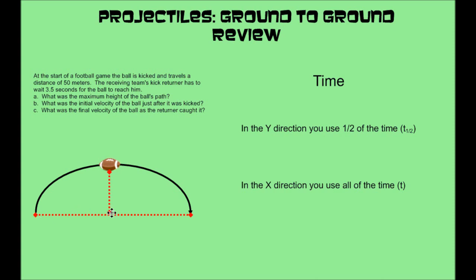For the y direction, it's different. In those 3.5 seconds, the ball goes up and then comes back down. We only use half the time — t-one-half, or 1.75 seconds — in the y direction. If we used the whole time, we'd be calculating one trip up and one trip down, effectively calculating that y-distance twice. So in the y direction, you only use half the time.